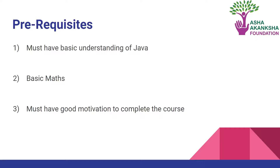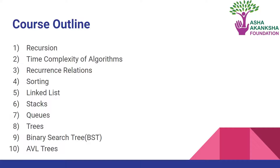The course outline starts with recursion, then time complexity of algorithms covering theta and Big O notations, followed by recurrence relations. After that, we cover sorting methods including insertion sort, bubble sort, heap sort, merge sort, and quick sort. Don't worry, we'll cover all of that in this course.